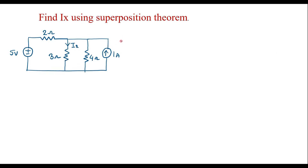Consider one example on superposition theorem. Find Ix using superposition theorem. This is the given circuit and Ix is the current which flows through the 3-ohm resistor. We are supposed to find Ix using superposition theorem. Here we have two independent sources: one is an independent voltage source of 5 volts and an independent current source of 1 amp.